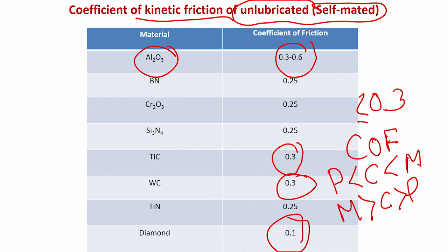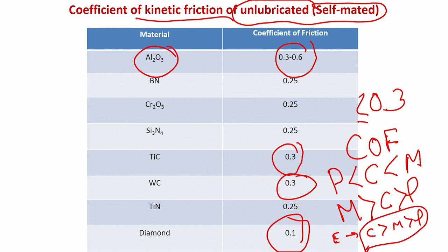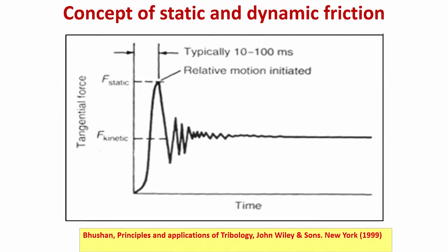This does not correlate directly with elastic modulus, because elastic modulus ranks ceramics highest, then metals, then polymers — the opposite trend to COF. Elastic modulus influences contact pressure, as discussed in the last lecture, but it does not have any direct correlation with coefficient of friction.